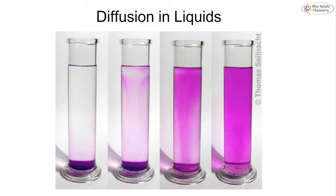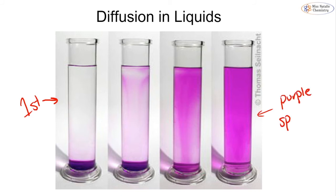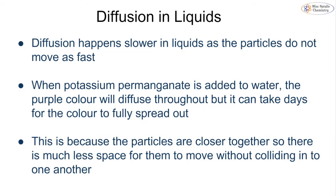Another common classroom experiment involves potassium permanganate and water. Potassium permanganate has a distinctive purple color. When added to water it diffuses through it — initially the water at the top looks clear, but over time the purple color spreads throughout until a fully purple solution is obtained.